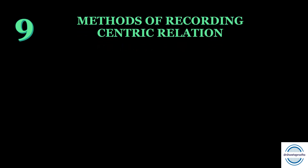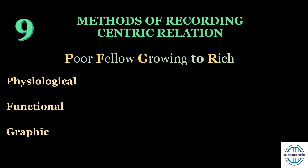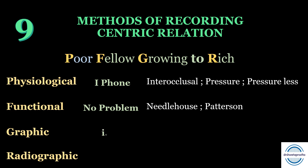The ninth mnemonic helps you remember all the methods of recording centric relation — often asked as a long question. The mnemonic is 'poor fellow growing too rich': P for physiological methods, F for functional methods, G for graphic methods, and R for radiographic methods. Physiological methods can be remembered by the word iPhone: I for interocclusal, P for pressure, and third pressure-less methods. Functional methods include Needlehouse (N) and Patterson (P). Graphic methods are intraoral and extraoral. The fourth is radiographic methods.